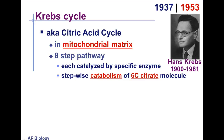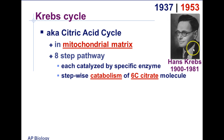Now let's move on to the Krebs cycle, which was discovered in 1937 and fully explained by 1953 by a guy named Hans Krebs. The name makes sense — Krebs cycle was discovered and explained by Hans Krebs, who really crystallized the research. The Krebs cycle is also referred to as the citric acid cycle, which you'll need to write down.